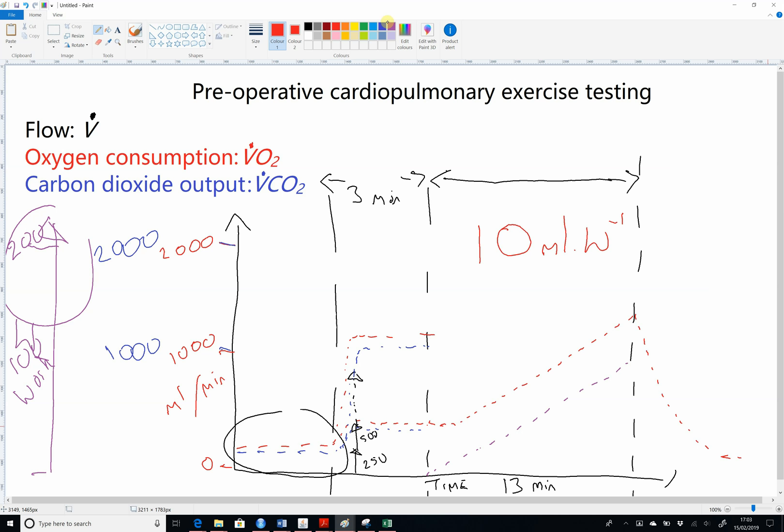What happens to the carbon dioxide output? Well, initially, just like the oxygen, there's a delay before it goes up, and then it will go up. And subsequent to that, at some point, you will see the carbon dioxide output exceed the oxygen consumption. Again, they get to the end, and that will drop as they recover.